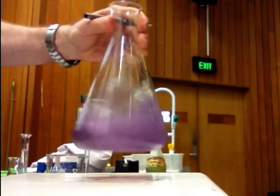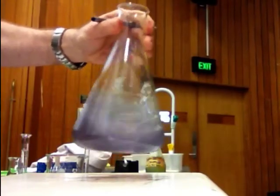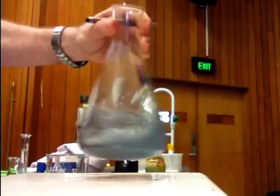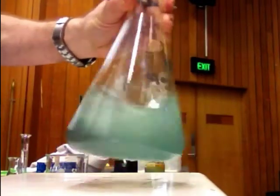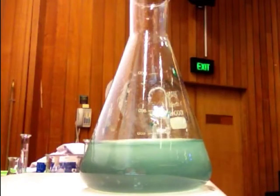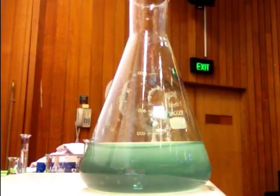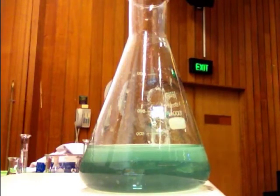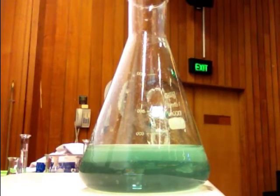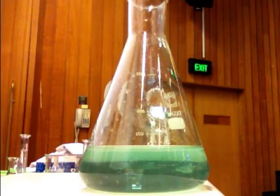So we started off with a pink color. And we've now got a green color, and that green color is MnO4 2 minus. How many D electrons has MnO4 2 minus got?